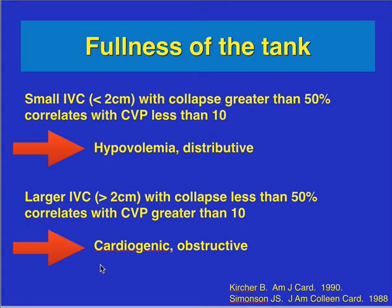What I actually use the inferior vena cava for is as a general trend, similar to a CVP. I also like to watch the IVC as I give fluid to see if there are changes. If you have a small IVC — less than 2 centimeters — with a collapse greater than 50%, that correlates with a CVP less than 10, and you may have hypovolemia. If you have a large IVC — greater than 2 centimeters and not collapsible — that correlates with a CVP greater than 10.